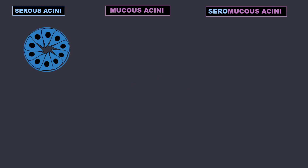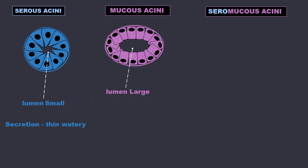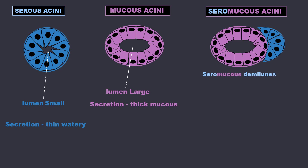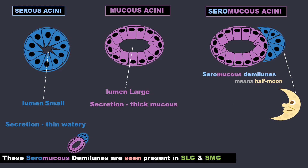In serous acini, the lumen is small and the secretion is thin and watery. In mucus acini, the lumen is large for containing the thick mucus secretion. Seromucus acini are called seromucus demilunes, named after the half-moon shaped cells at the base of the mucus sacs. These seromucus demilunes are seen in the sublingual gland and the submandibular gland.